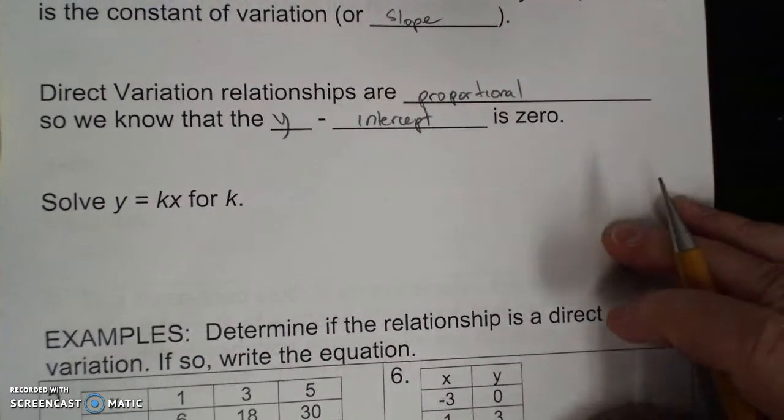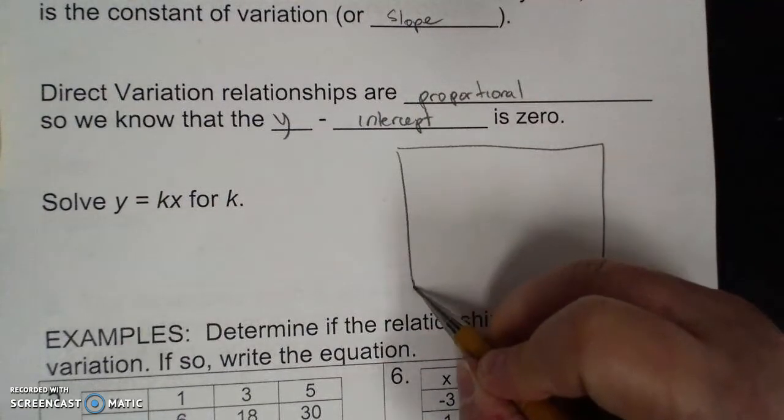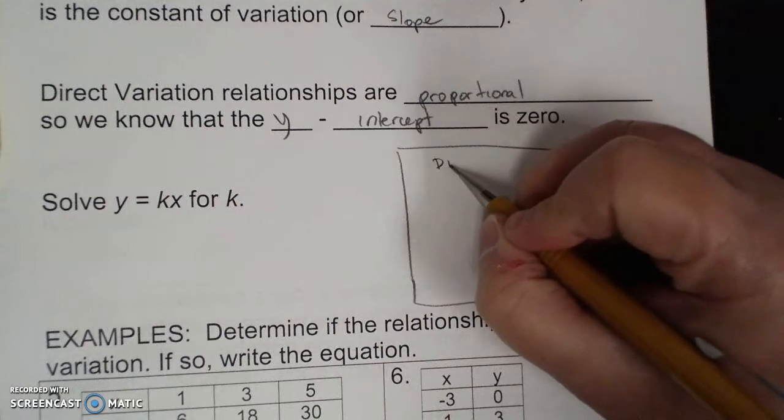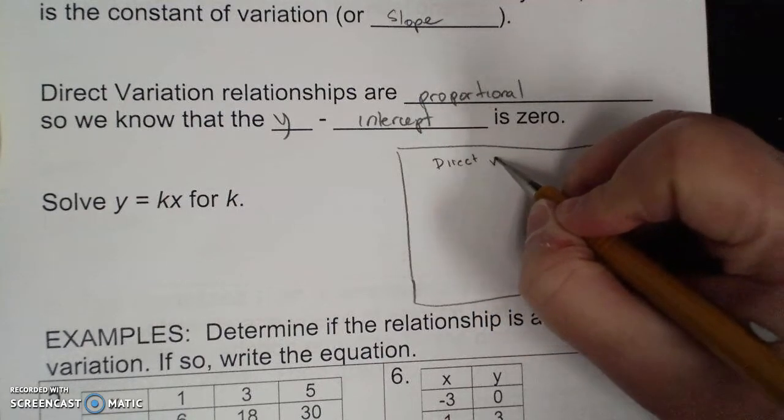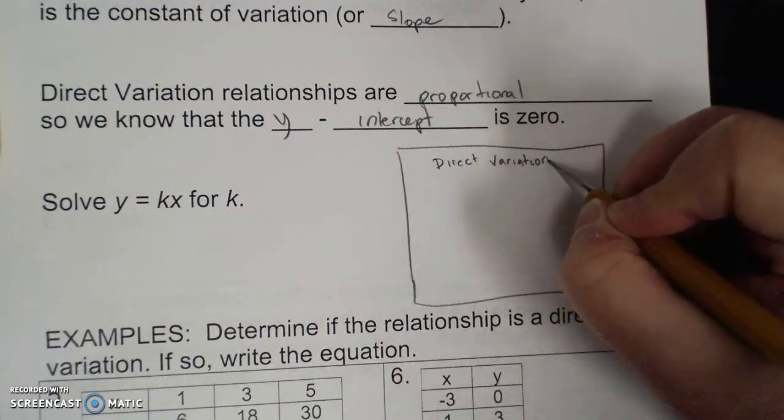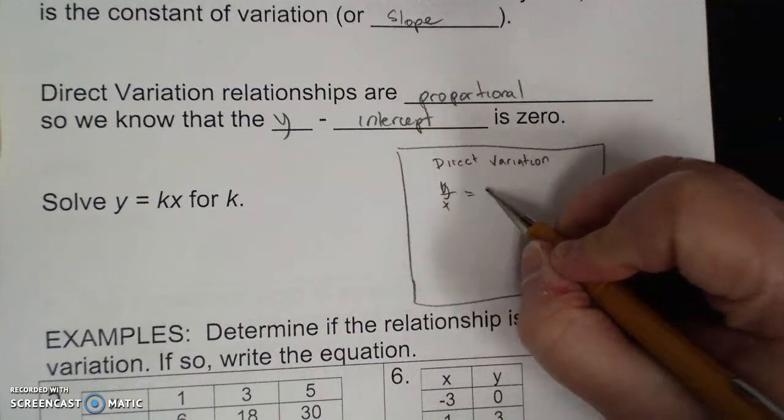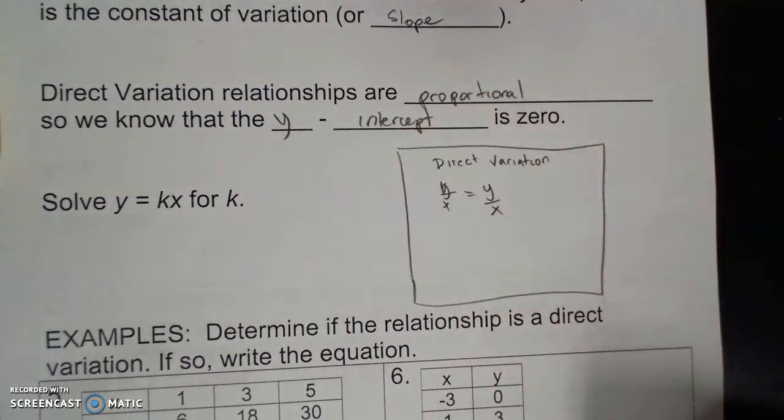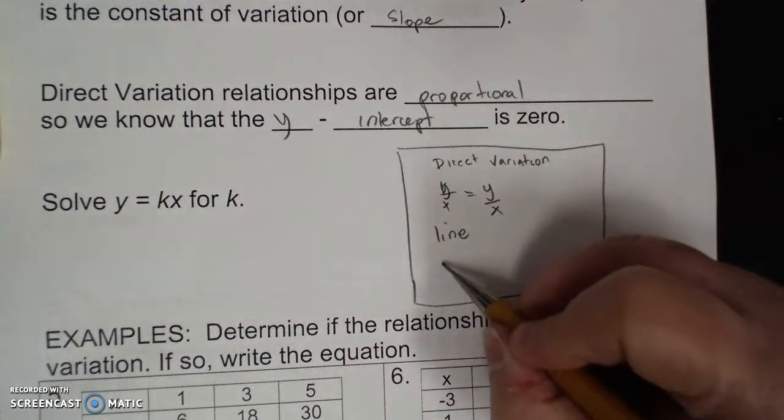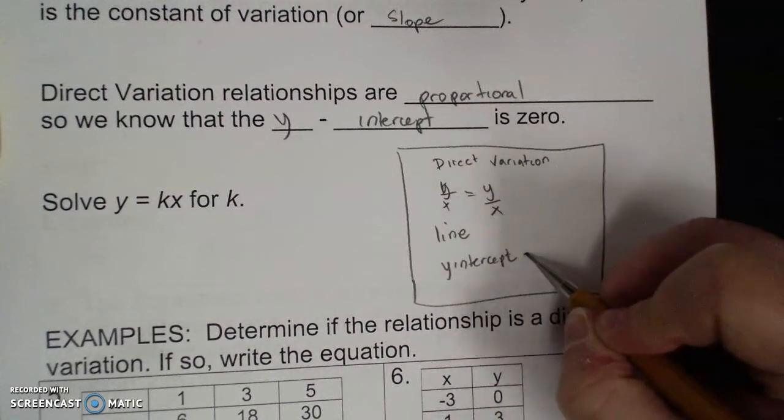So to become a direct variation, I basically have a checklist, and all three of them have to be correct. If I have a direct variation: y over x has to equal y over x, must be a line, and y-intercept equals zero.